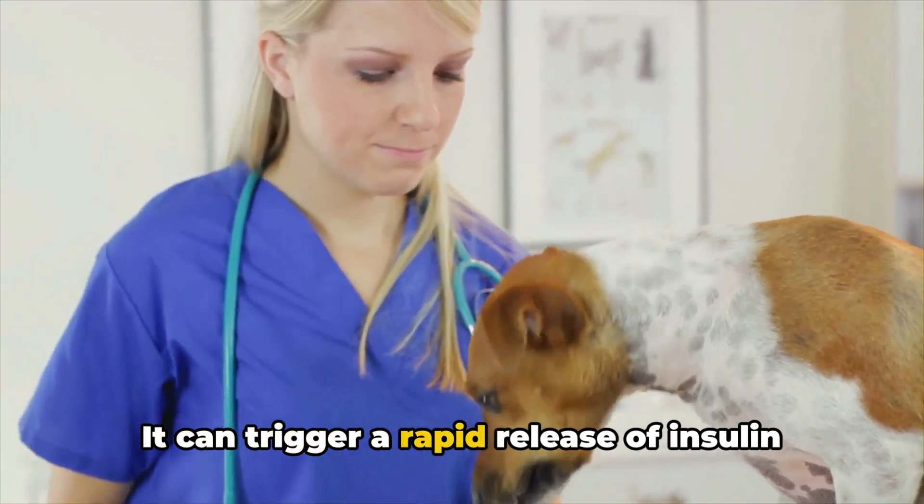Some everyday items can pose a threat to our dogs. It's startling, isn't it? Things we take for granted, like our morning cup of Joe or the over-the-counter medication we use when we have a headache. These can be seriously harmful to our furry friends. Alcohol, even in small amounts, can lead to significant intoxication for dogs, causing a range of symptoms from a lack of coordination to difficulty breathing, and in severe cases, even death.